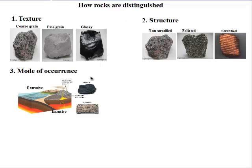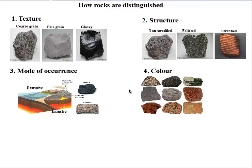We also used the mode of occurrence to distinguish between rocks. Some rocks are formed within the earth's crust, while others are formed on the earth's surface. Then we use color — some rocks are black, others green, others white, others red — and this color also helps distinguish between rocks.